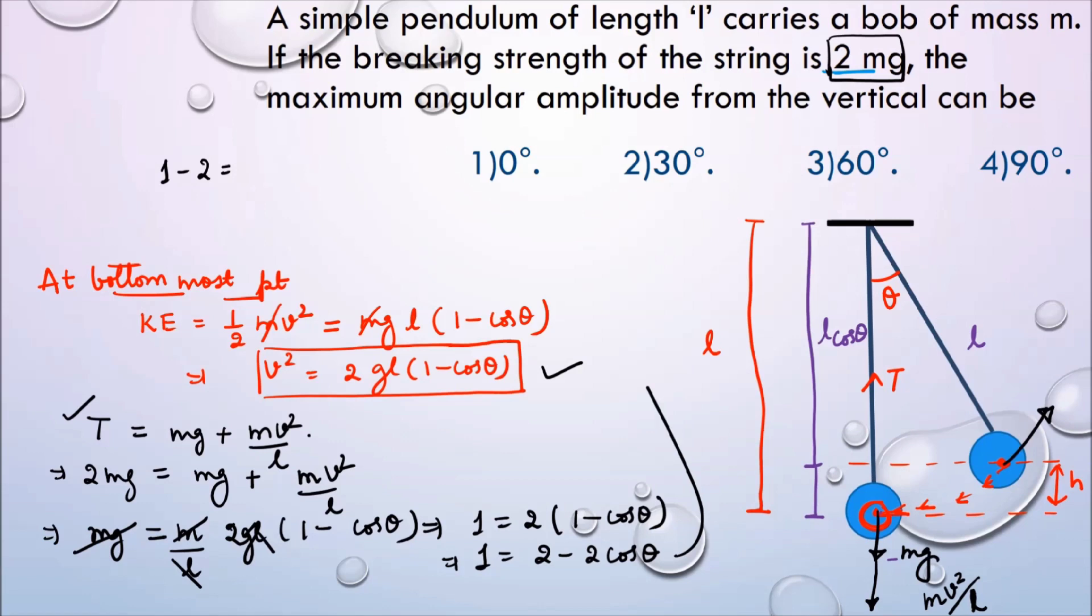So cos θ is equal to minus 1 by minus 2, or just 1/2. And cos θ - when is cos θ equal to 1/2? When θ is equal to 60 degrees. And this is our answer.